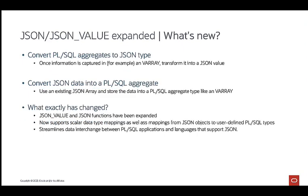Now that I have explained a bit more about aggregates inside PL/SQL, what exactly is new in 23c in this area? We have expanded the functionality of the JSON function and the JSON value function to accept PL/SQL aggregates as source and target. So we can now use a PL/SQL aggregate, like an array, and use the JSON function to transform the elements into a JSON object or array. The same goes the other way around: if you have a JSON object or array, you can now use JSON value to transform the elements and load them into a PL/SQL aggregate type variable.